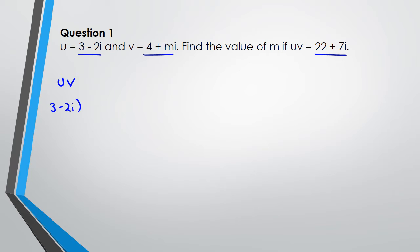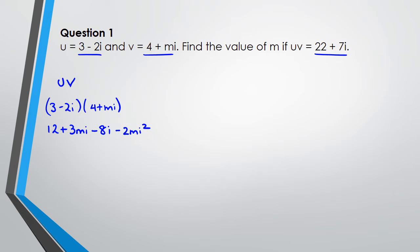So that means I've got (3 minus 2i) multiplied by (4 plus mi), and when I expand it like a quadratic I end up with 12 plus 3mi, minus 8i, and then negative 2m i-squared. I can simplify this because i-squared equals negative 1, so I substitute negative 1 there. That gives me 12 plus 3mi minus 8i minus 2m, and negative 2m times negative 1 is positive 2m.